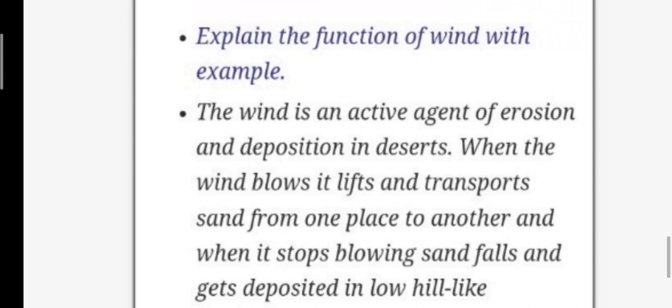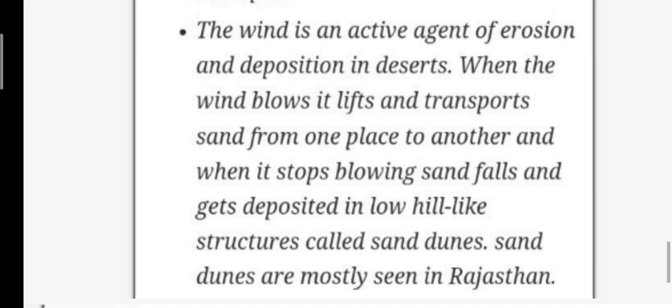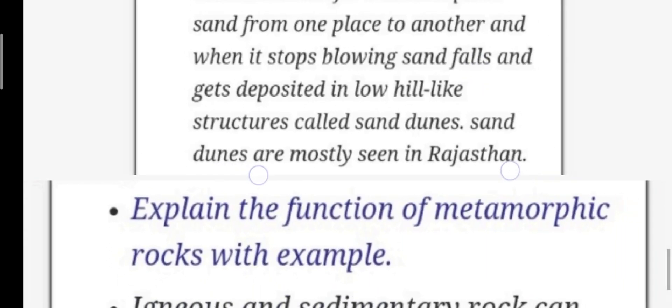Explain the function of wind with example. The wind is an active agent of erosion and deposition in desert. When the wind blows, it lifts and transports sand from one place to another place. And when it stops blowing, sand falls and gets deposited in low hill-like structures called sand dunes. Sand dunes are mostly seen in Rajasthan.